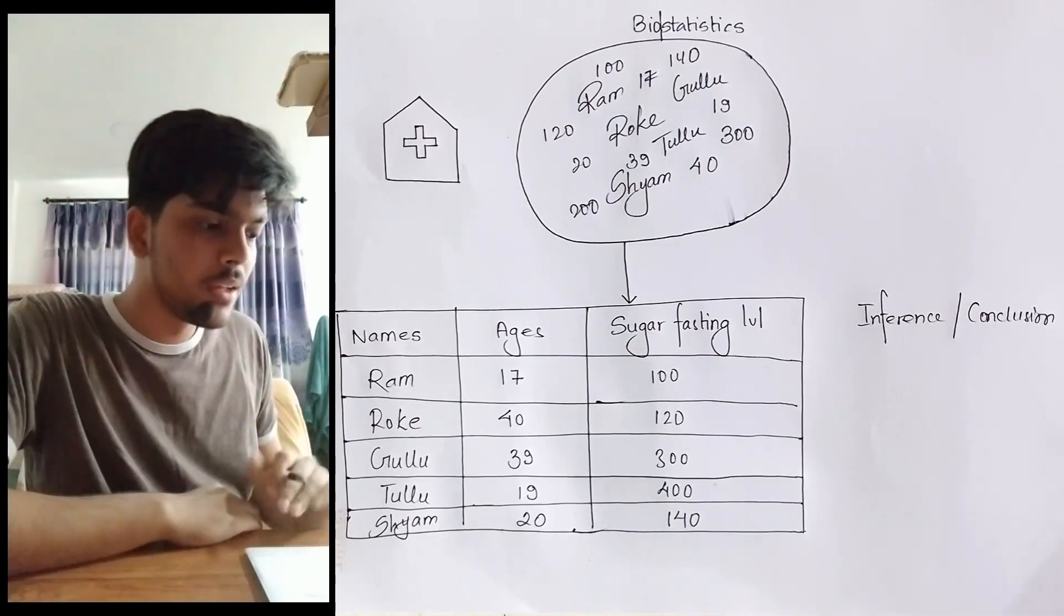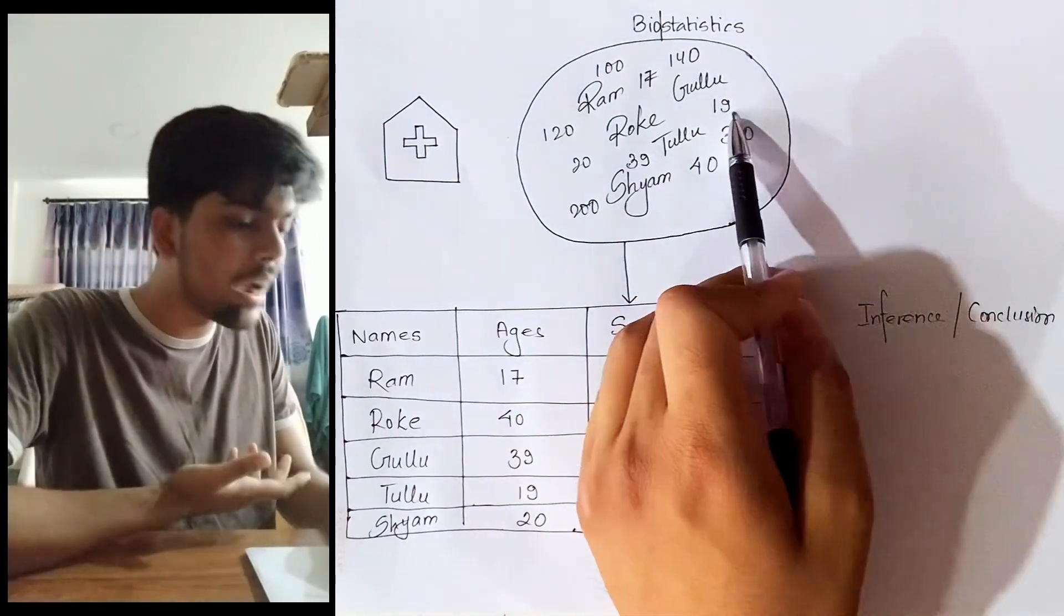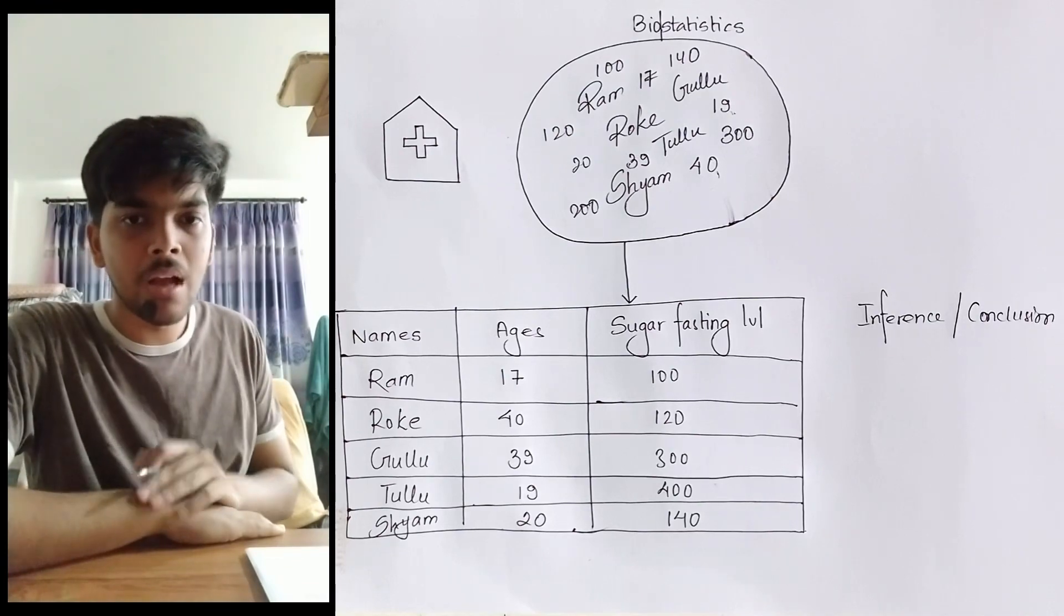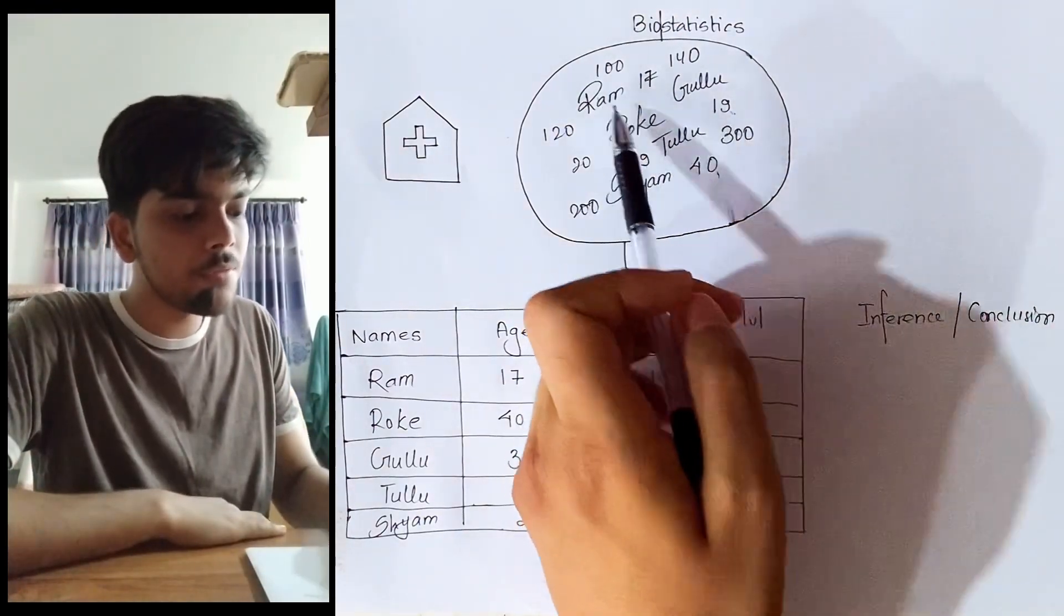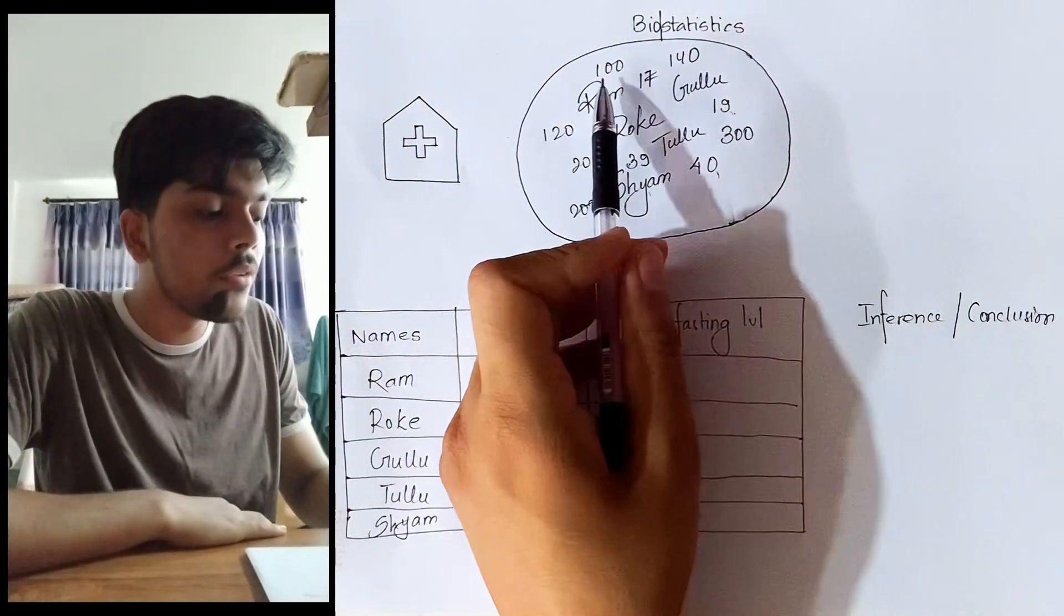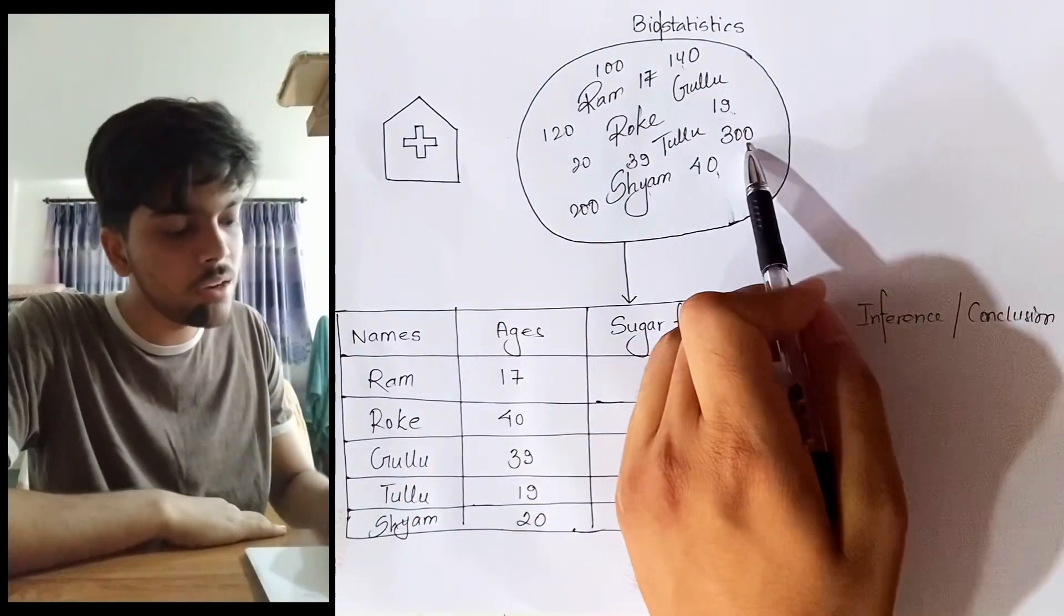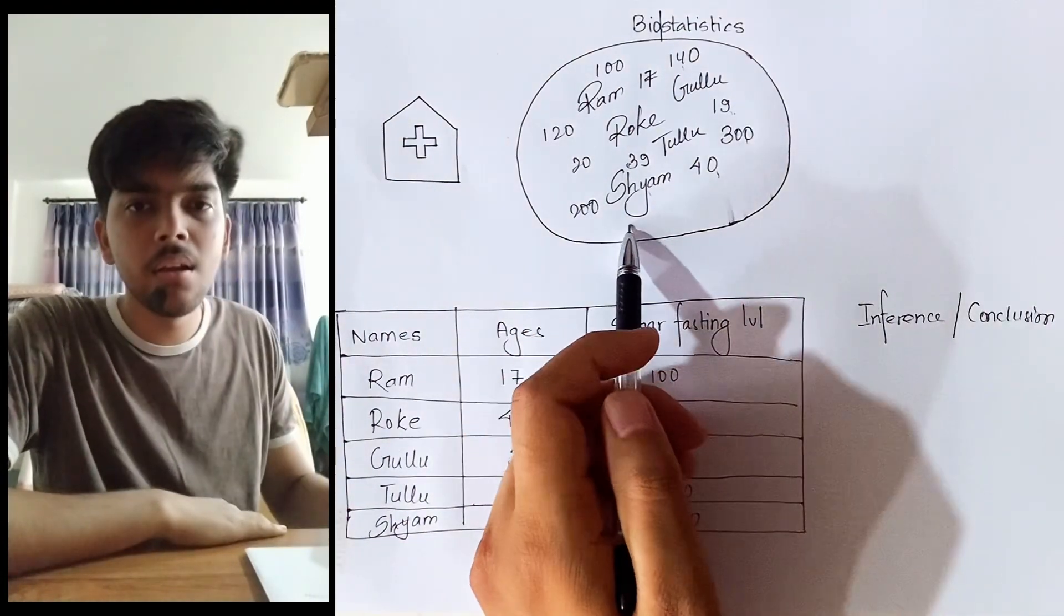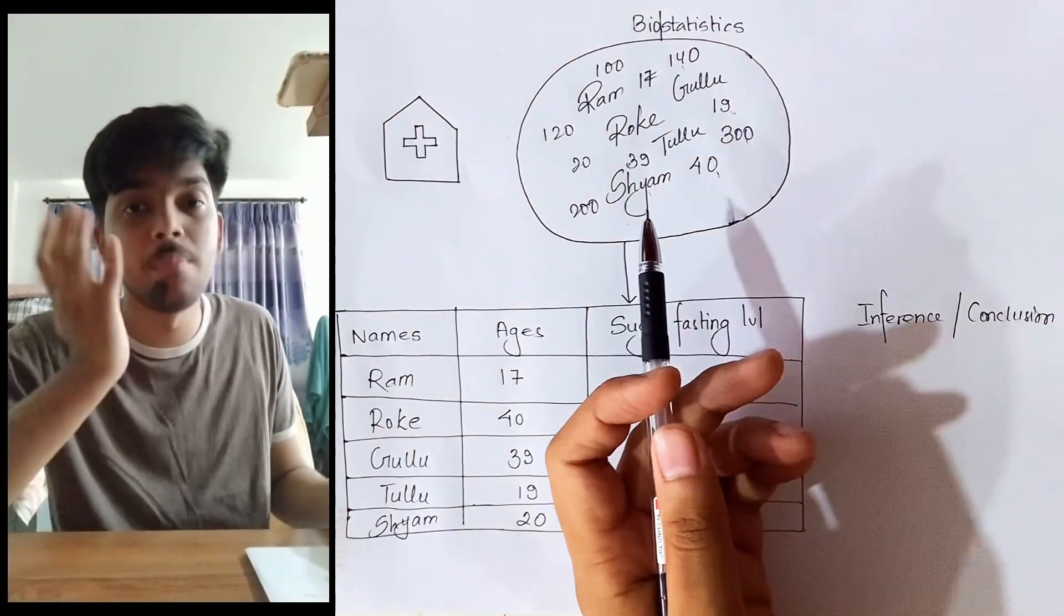Since you have not had anything, the glucose level is comparatively low. But that's not our concern right now. Our concern is biostatistics. So five people visited and their ages were 17, 20, 39, 19, and 40. After the result came back, all these five people had five different sugar level fasting: someone had 100, someone had 120, the other had 140, the other had 300, and the other had 200. What we have here is a mess because this gives us no information at all.